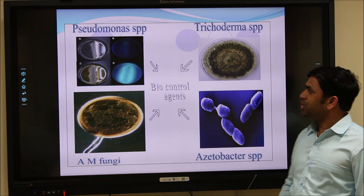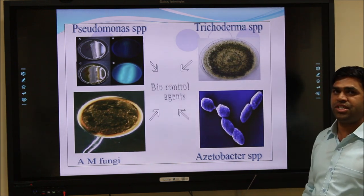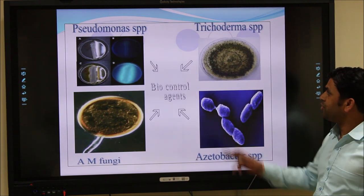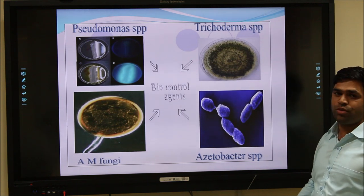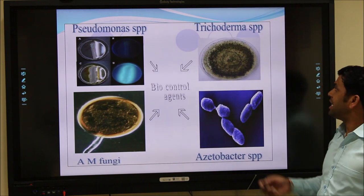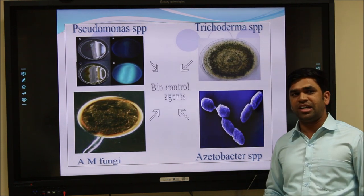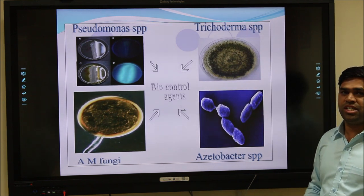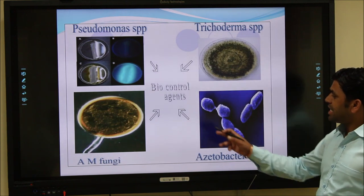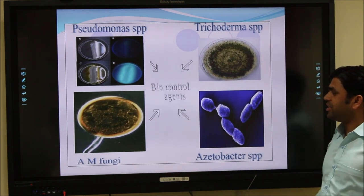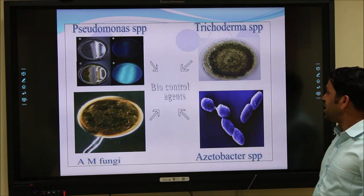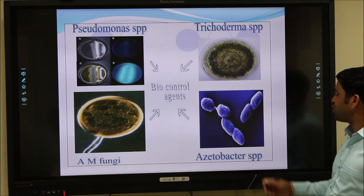This photograph shows the different biological control agents which can control the growth of plant pathogens. The first is Pseudomonas, a bacterium which controls major plant pathogens. Next is Trichoderma, a fungal biological control agent which controls different types of pathogens. Next is Arbuscular Mycorrhizal fungi, which also acts as a biological control agent. Next is Azotobacter.